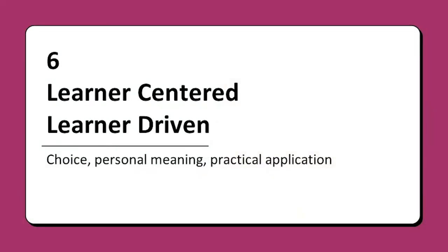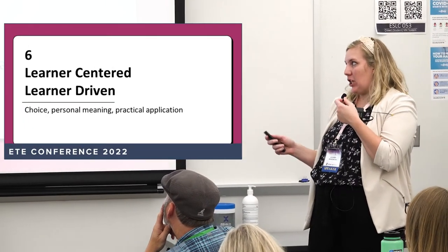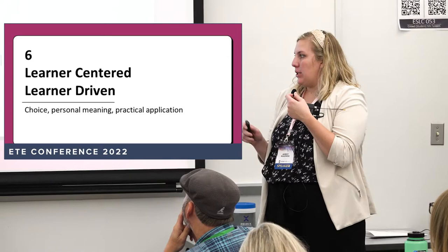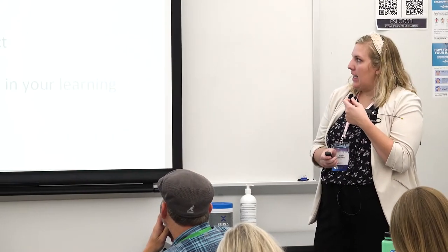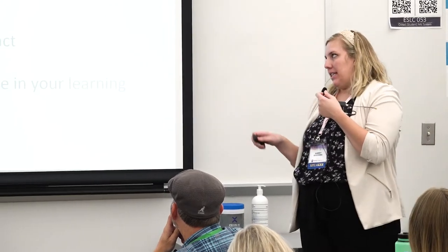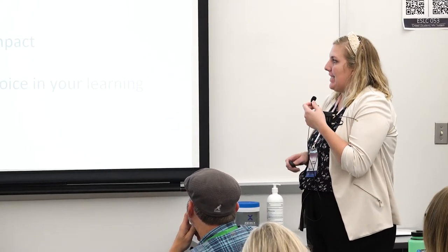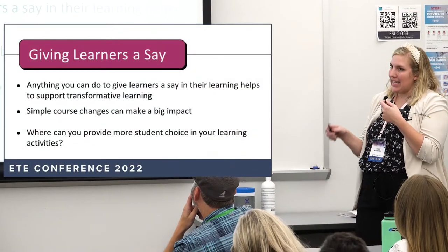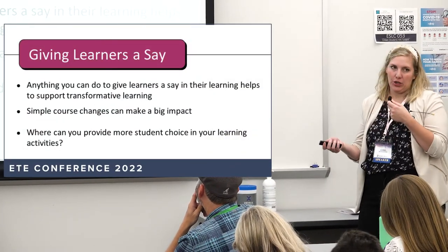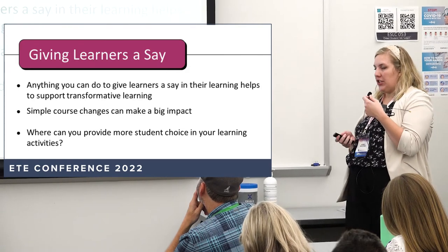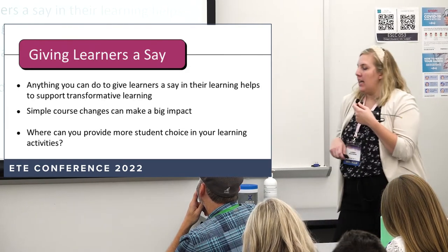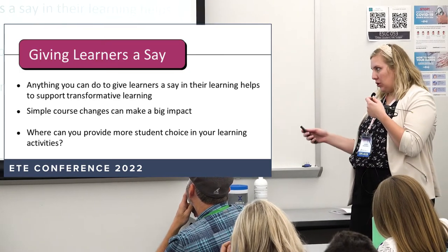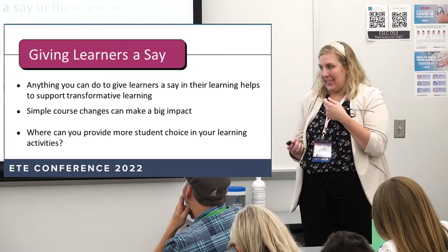This leads nicely into our last strategy: creating a course that is learner-centered and learner-driven. Choice, personal meaning, and practical application are three ways we can do this. Some key principles to highlight: anything you can do to give your students a say in their learning is going to support transformative learning. There are simple course changes that can make a big impact on students' learning experience. Ask yourself: where can you provide more student choice within your course this next semester?